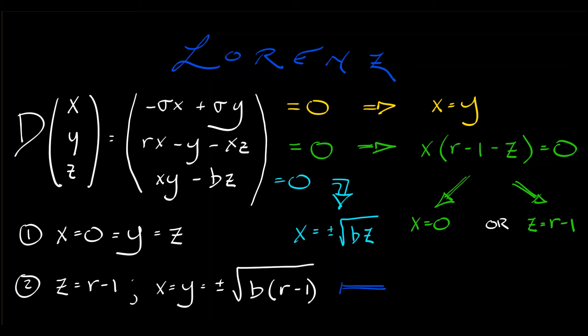Now, remember, since b is positive, we need, in order for this pair of equilibria to exist, r must be greater than or equal to 1, and when r is equal to 1, we have the origin. Aha, that looks interesting.